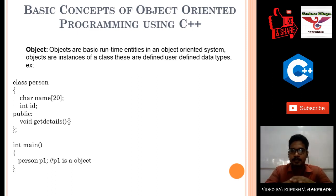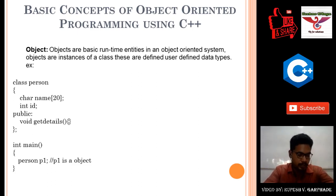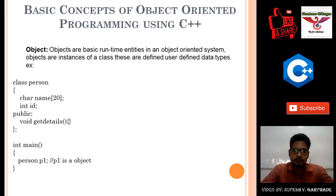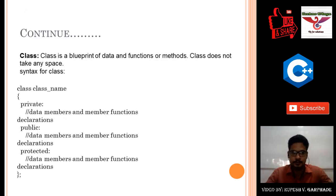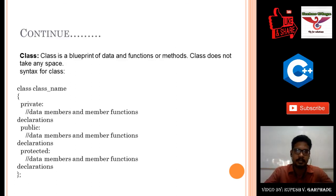An object creates an instance of the class — that means separate memory is created and used. Each object stores its data separately. That is the use of an object.